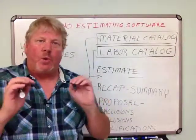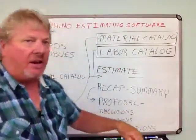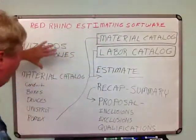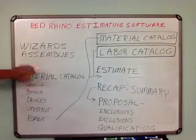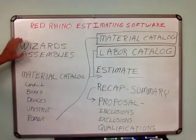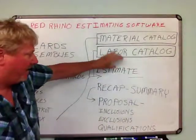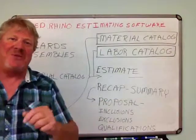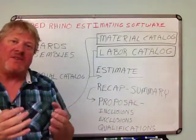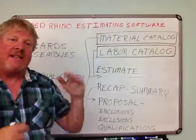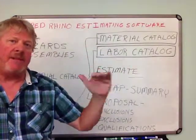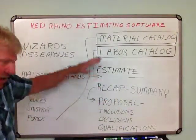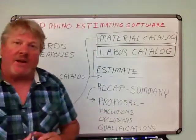They're boilerplates — that's what makes it really fast. It has a material catalog with pricing, a labor catalog with labor for each item, thousands of material items, and wizards and assemblies for super-fast input. The estimate comes up with a total in the recap, and we have boilerplates in the proposal. The main thing is to start at the first videos and go step by step in order — it'll take you through all the steps: estimate, recap, and proposal. You'll get really proficient and bang out your estimates a lot quicker.